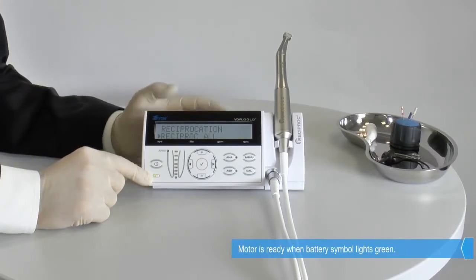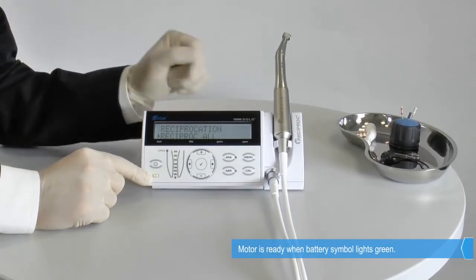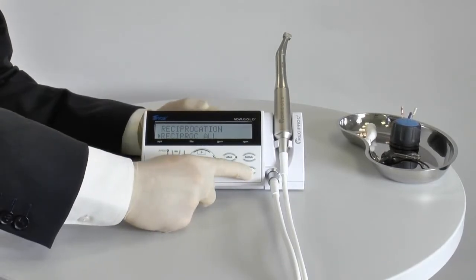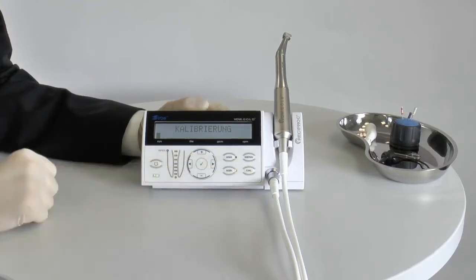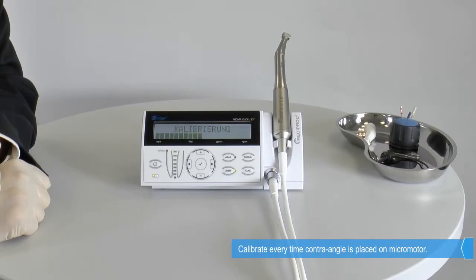After proper care and maintenance, the contra angle can be put on the micro motor. Then press the C-A-L key. The calibration is important to ensure the contra angle's torque accuracy. The contra angle needs to be calibrated every time it is put back on the motor.